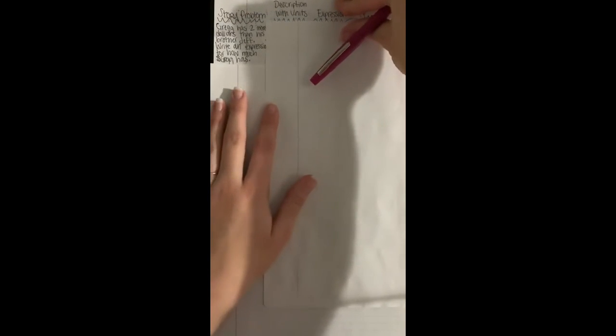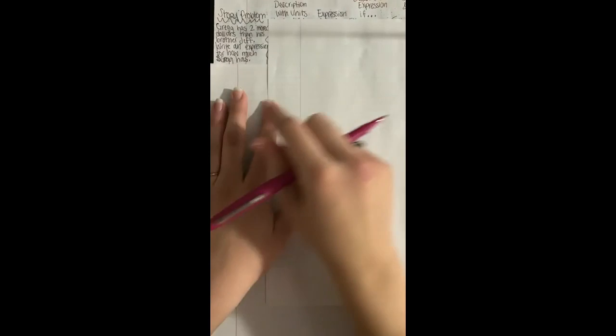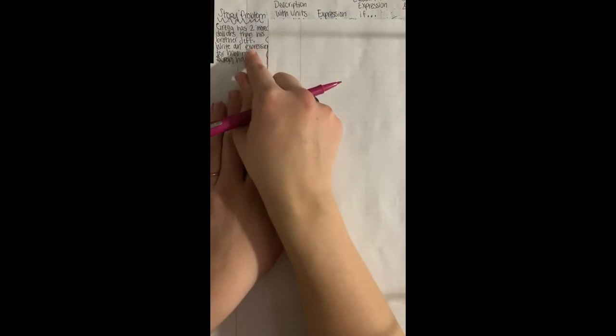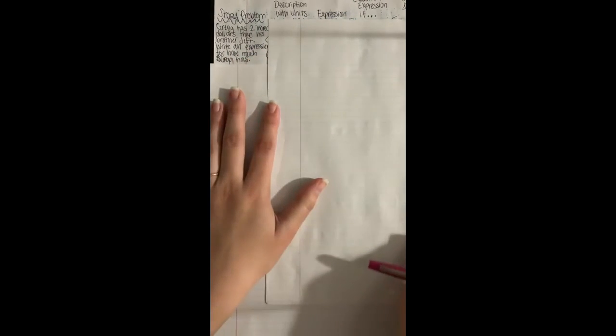Once you have that set up, you can go ahead and write the first story problem. And I'm gonna keep part of this covered up so you only see a little bit at a time. So Greg—and you have to write small—but Greg has two more dollars than his brother Jeff. Write an expression for how much money Greg has.